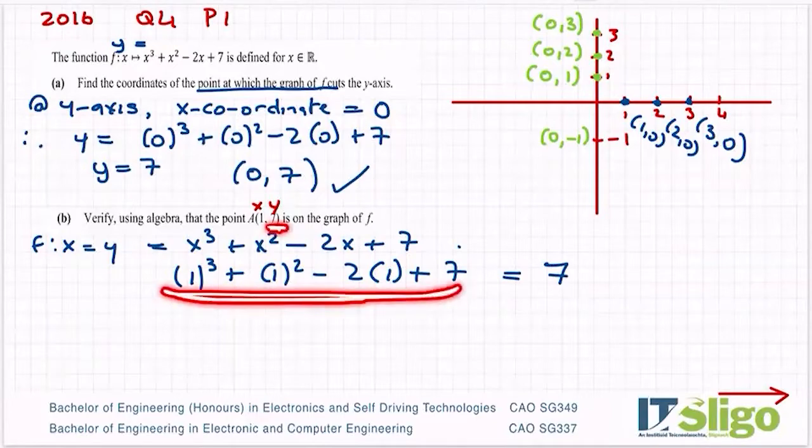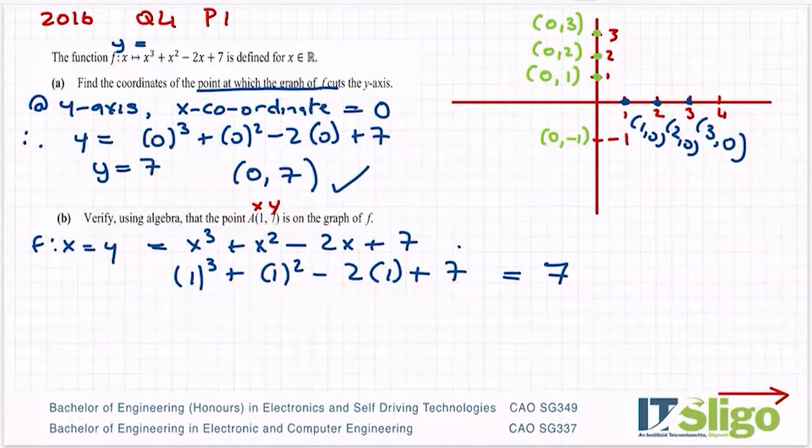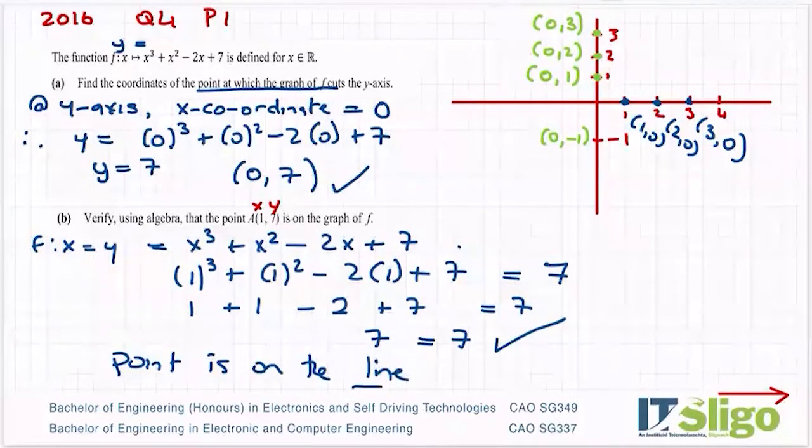So I'm going to put all this into the calculator and see does it equal 7. So 1³ is 1 + 1² - 2 + 7 is equal to 7. So what you'll find is 7 is equal to 7. So therefore, the point is on the line. So I hope those two make sense. They could come up in an algebra question, coordinate geometry question, or a functions and calculus question. So well worth your while knowing how to do them.